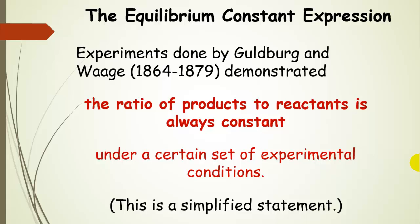Experiments done by two scientists, Guldberg and Waage, demonstrated that the ratio of products to reactants is always constant under a certain set of experimental conditions. I've simplified this statement a little bit, but the bottom line is: under a certain set of experimental conditions, the ratio of products to reactants is always constant.